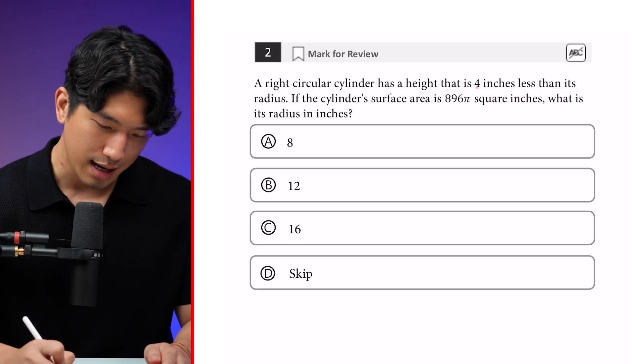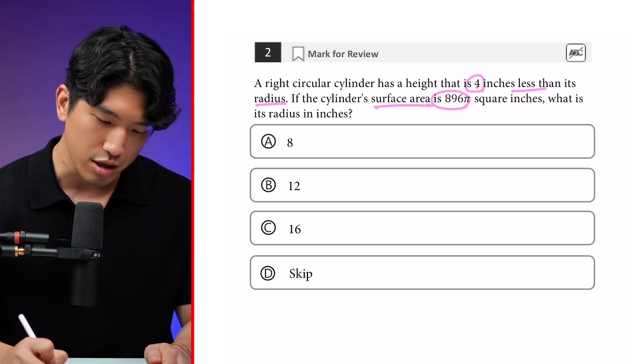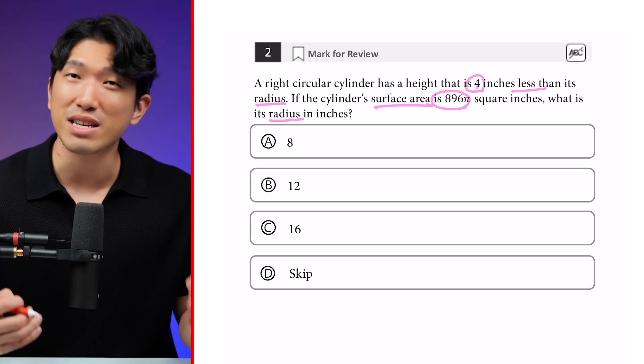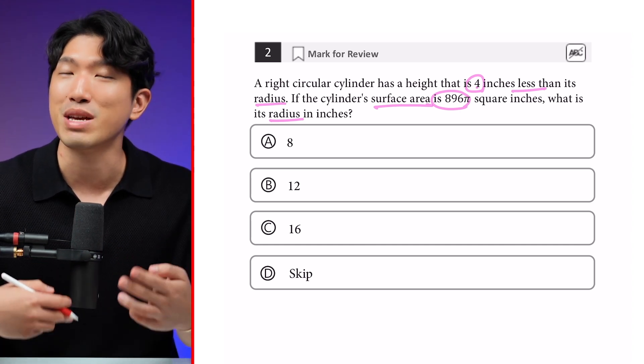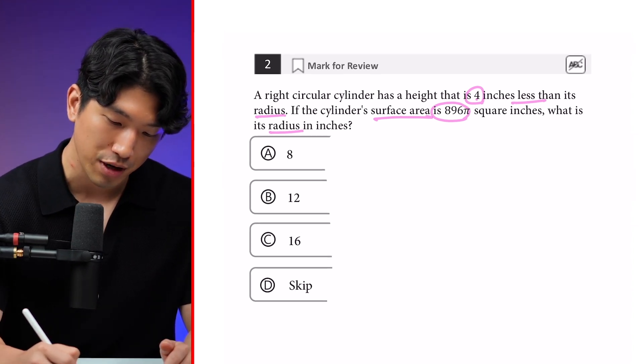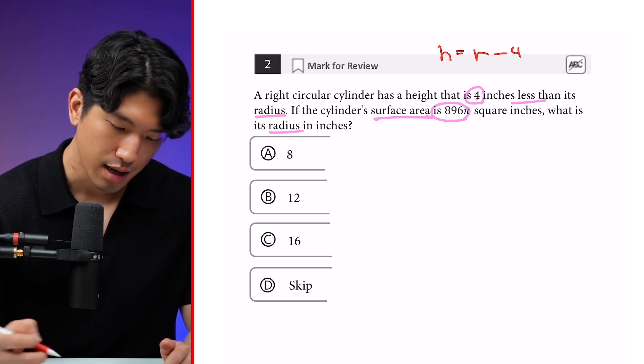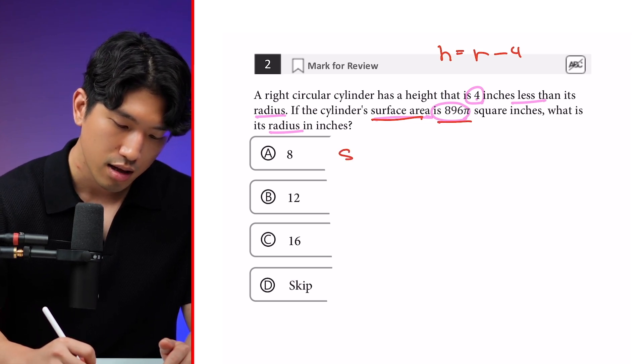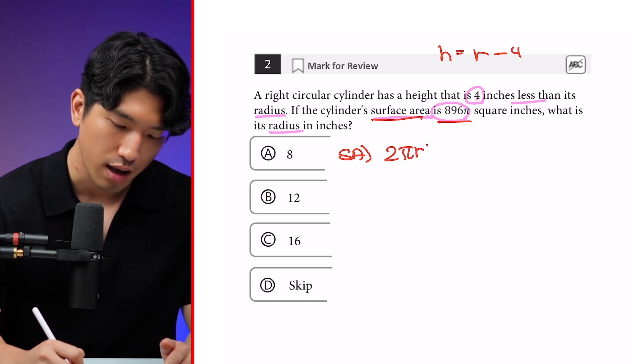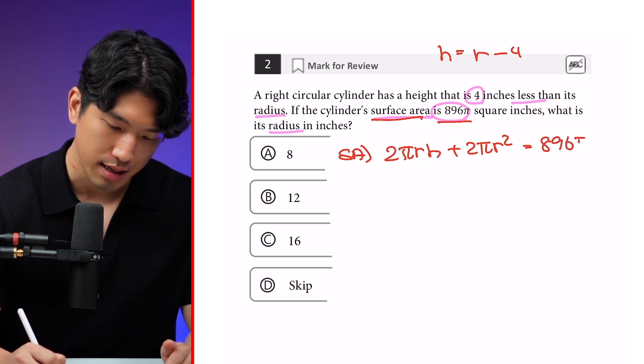Let's go to a little bit more complicated version. The question says, a right-circular cylinder has a height that is 4 inches less than its radius. If the cylinder's surface area is 896π square inches, what is its radius in inches? So this is a volume question, and you might not think of Desmos at first, but soon it's going to become obvious that Desmos is the way to go.